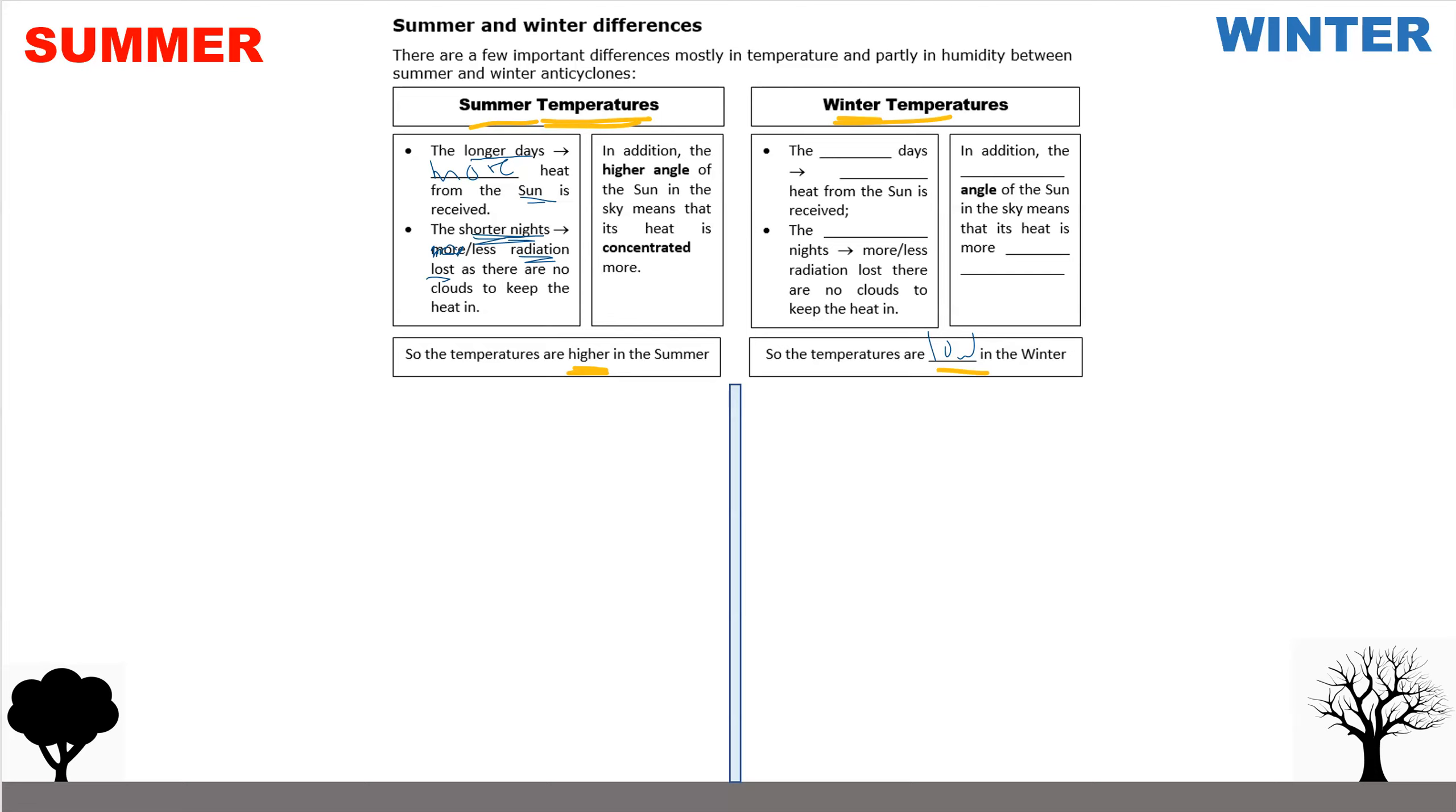In addition to that, you have got something to do with the angle of the sun. Now think back to when we looked at temperature in the climate section. And this will help you for temperature and latitude.